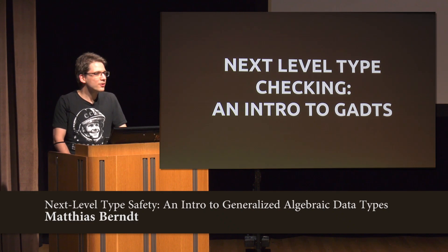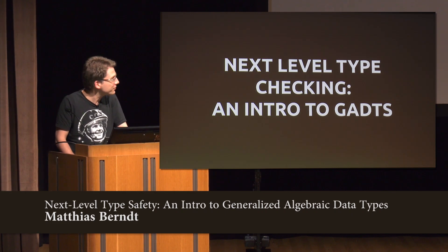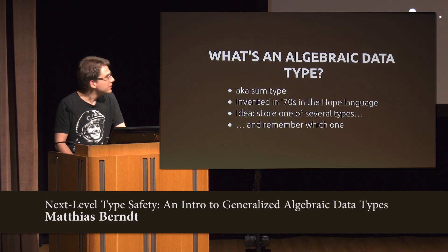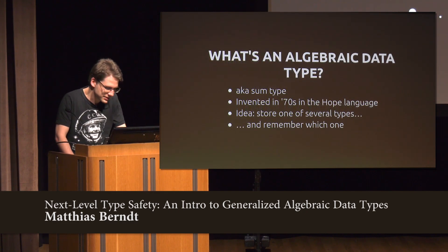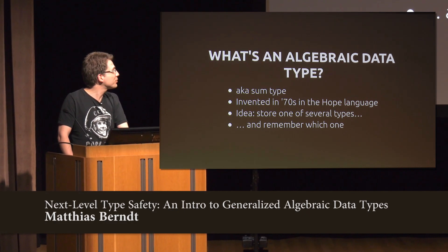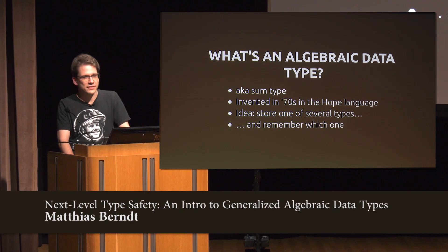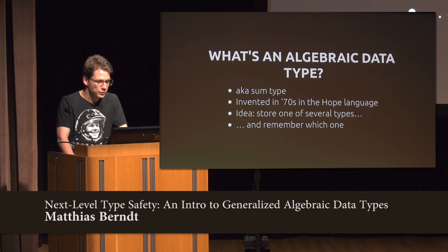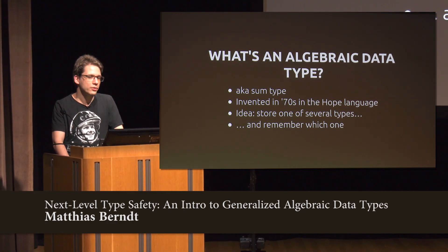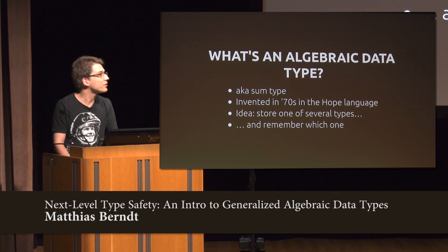When you give a talk about something called 'generalized whatever', the obvious question is: what is it a generalization of? It's a generalization of algebraic data types, invented in the 1970s in programming languages. The idea is that you can store one of several data types in a value, and the value will remember which one it was, so you can pattern match and process them in whatever way is appropriate for that data type.